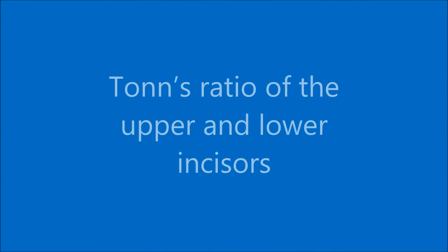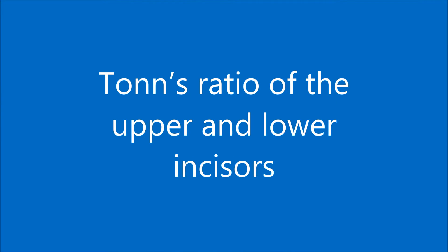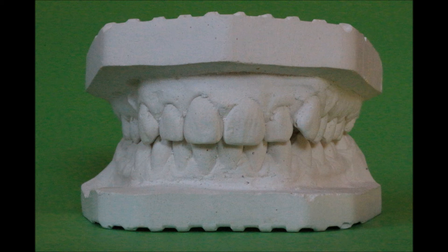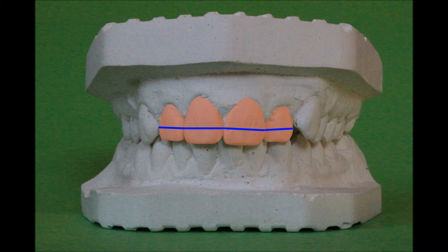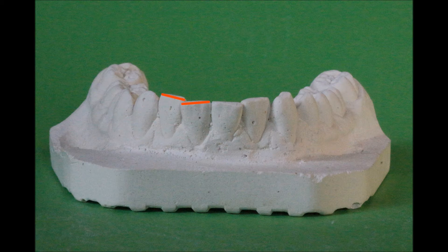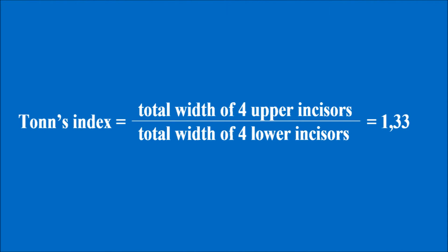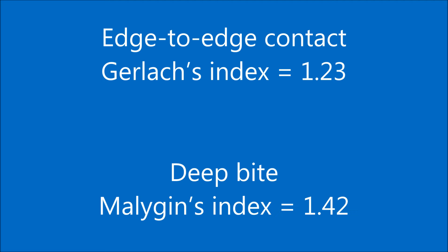Tons index is the ratio between sums of mesodistal width of 4 upper and 4 lower permanent incisors. It equals 4 thirds, or 1.33. This ratio corresponds to orthognathic occlusion with normal overjet and overbite on 1 third of height of the crowns.